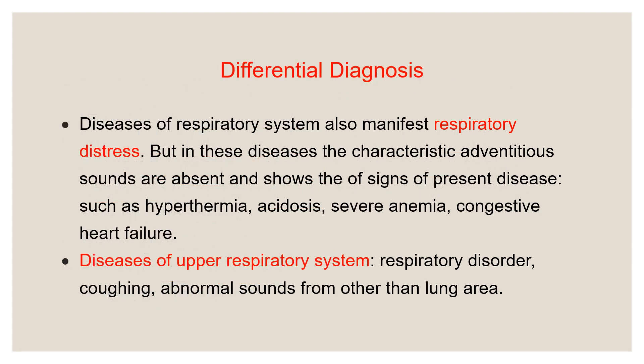Coming to the differential diagnosis part — diseases of the respiratory system manifest many symptoms: coughing, respiratory distress. Respiratory distress is manifested by so many diseases. But in pneumonia, there is a characteristic adventitious sound. When the lung is affected, adventitious sound is present. When the disease is at some other place, there is absence of adventitious sound. When there is presence of other diseases, there are signs of those present diseases.